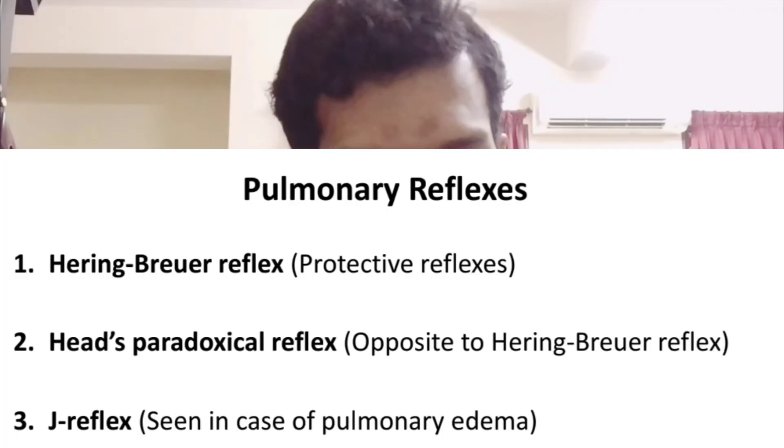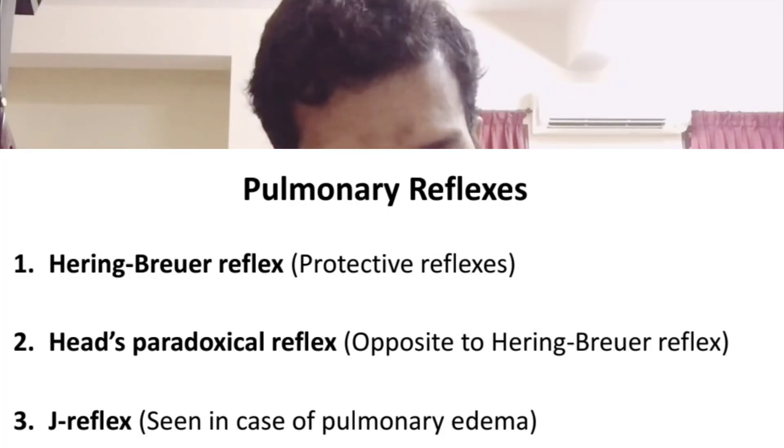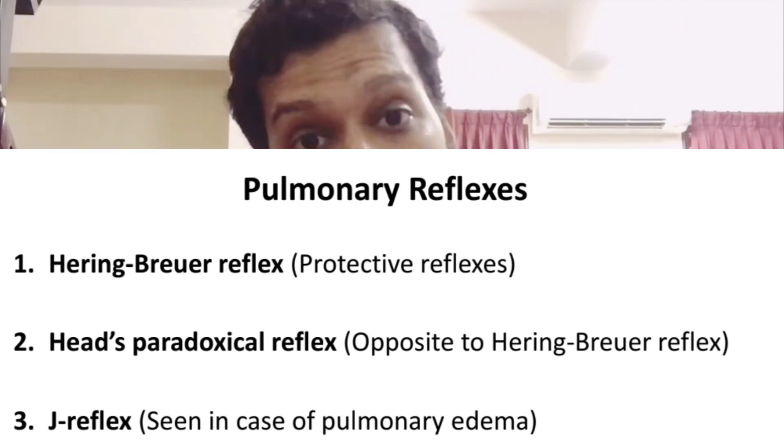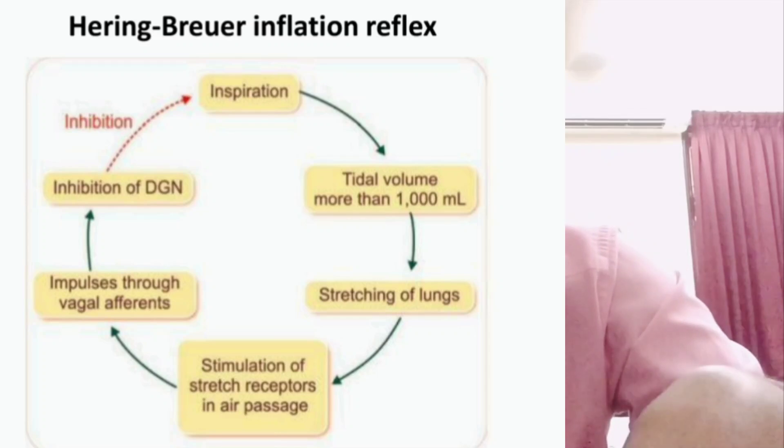Pulmonary reflexes include: First, the Hering-Breuer reflex, which has an inflation reflex and a deflation reflex. When the lungs are overstretched — up to three times the tidal volume — the Hering-Breuer inflation reflex reduces inspiration and commences expiration, preventing lung injury.